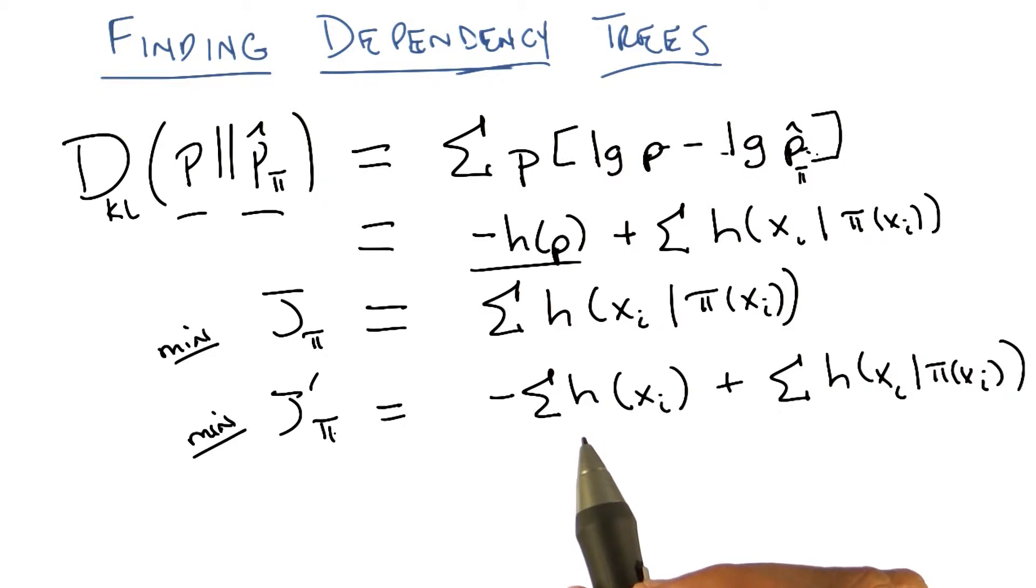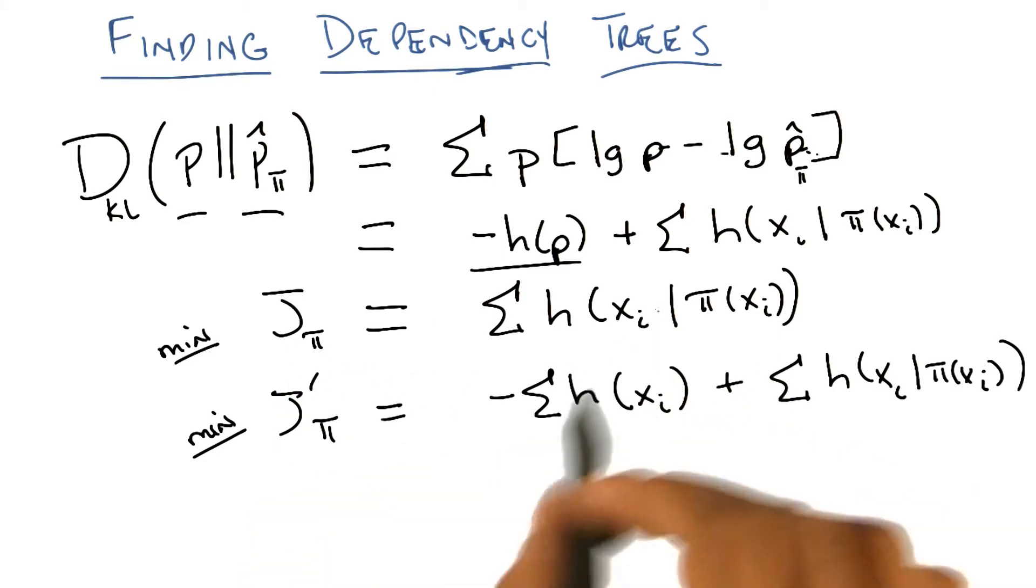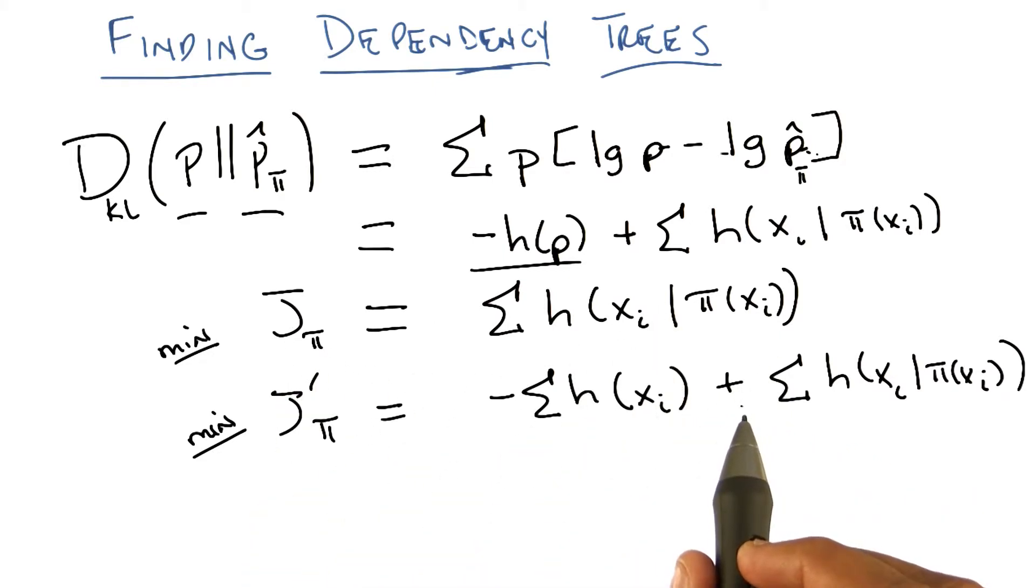Do you see how minimizing this versus minimizing this should give me the same π? I do. It's sort of like adding a constant. If you've got a max, it doesn't change which element gives you the max.